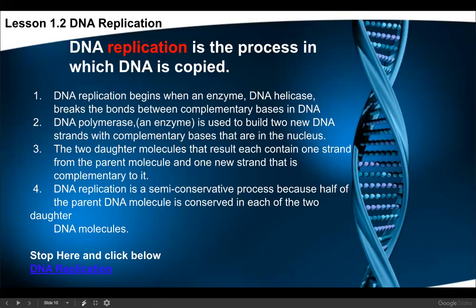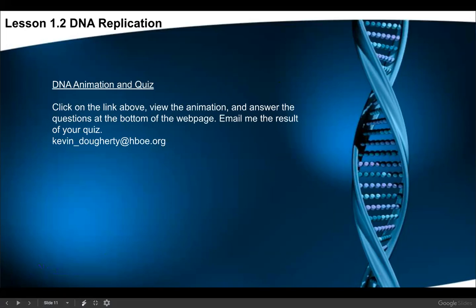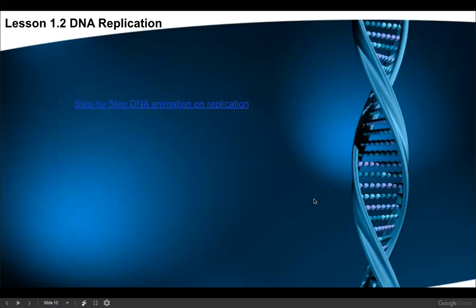DNA replication is the process in which DNA is copied. It begins with an enzyme called DNA helicase — any enzyme ending in -ase helps a process take place — helicase breaks the bonds between the complementary bases, separating the two sides. DNA polymerase then builds two new DNA strands with complementary bases. The two daughter molecules each contain one strand from the parent molecule and one new strand. This is known as the semi-conservative process, because half of the parent DNA is conserved and half is newly added. You can watch a video and access a quiz from this lesson.